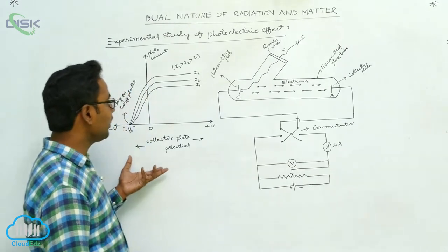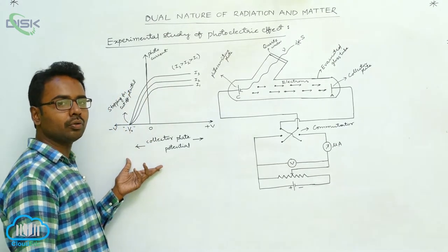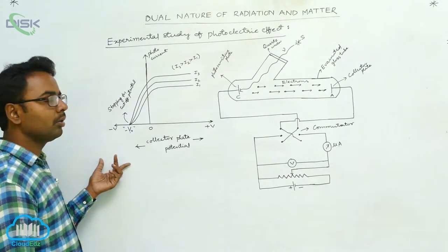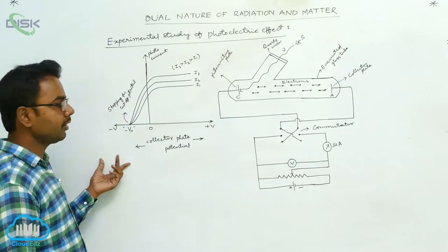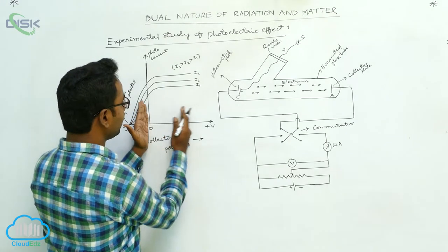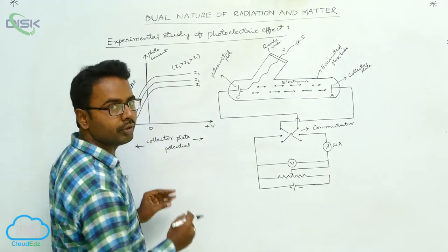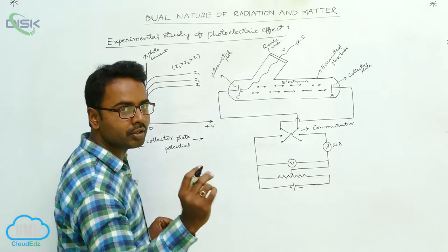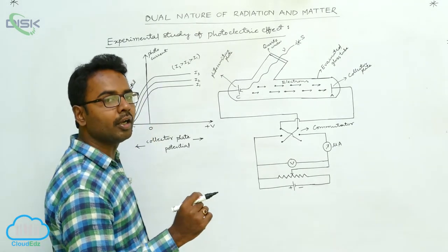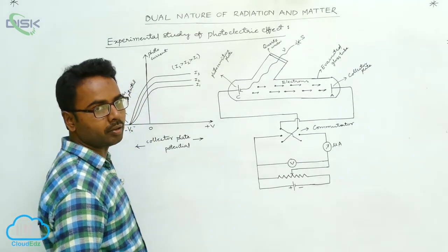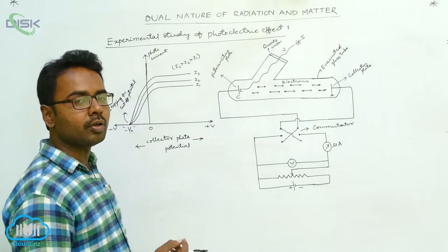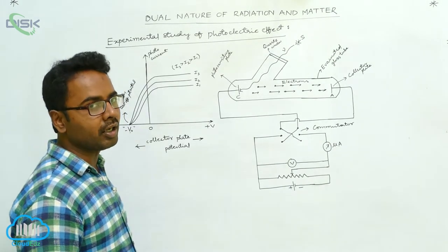This graph shows the variation of photocurrent with the potential of the collector plate. This side shows the variation of photocurrent with the positive potential of the collector plate, and this side shows the variation with the negative potential. First, we study the variation with the positive potential.